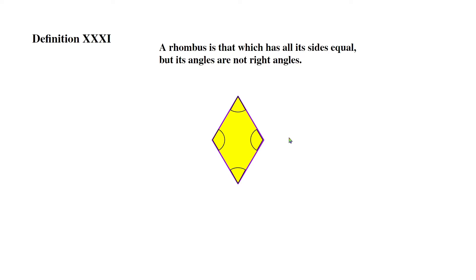Definition 31: a rhombus is that which has all its sides equal but its angles are not right angles. So a rhombus, just like a square, has all of its sides equal to each other, but the difference is a rhombus does not have all right angles.